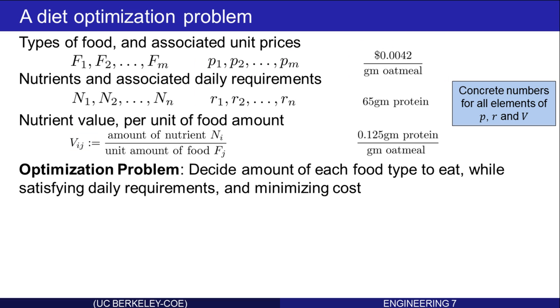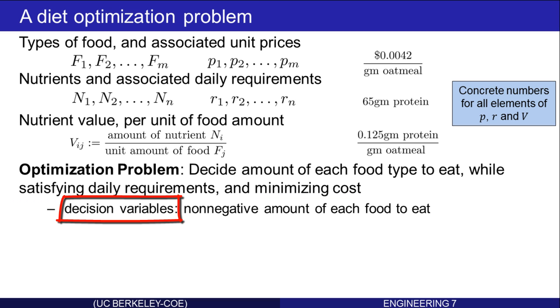The diet optimization problem is to decide the amount of each food type to eat while satisfying the daily requirements and minimizing cost. The decision variables, and that's a term that we'll use throughout this module, are the non-negative amounts of each food to eat. That's what we need to decide. That's why they're called decision variables. A1, A2, up to AM. And of course, as mentioned, these have to be non-negative amounts.